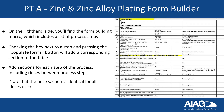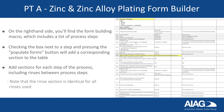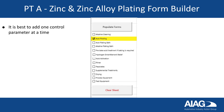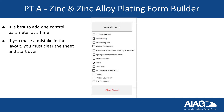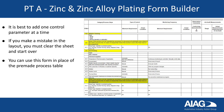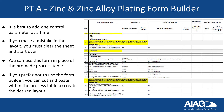Note that the rinse section is identical for all rinses used. It is best to add one control parameter at a time. If you make a mistake in the layout, you must clear the sheet and start over. Once completed, you can use this form in place of the pre-made process table. If you prefer not to use the form builder, you can cut and paste within the process table to create the desired layout.